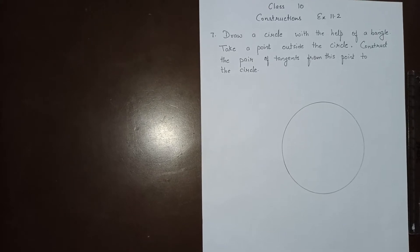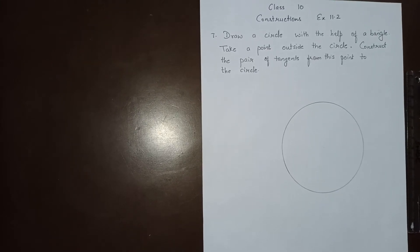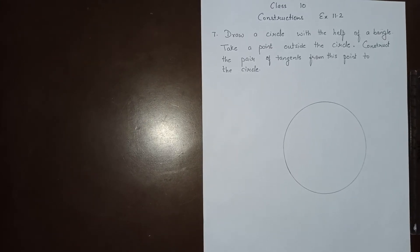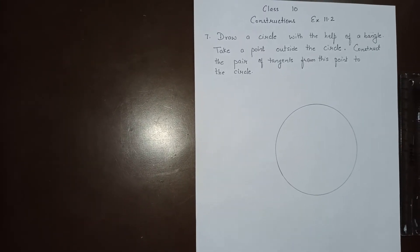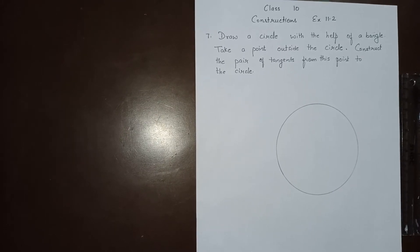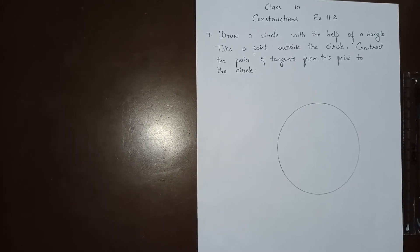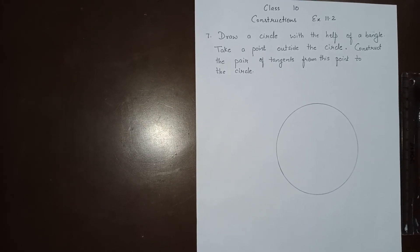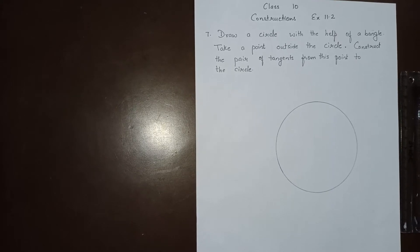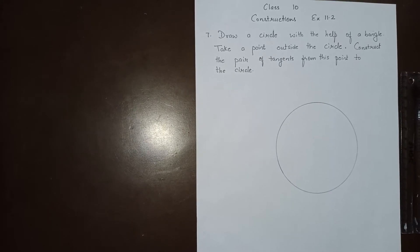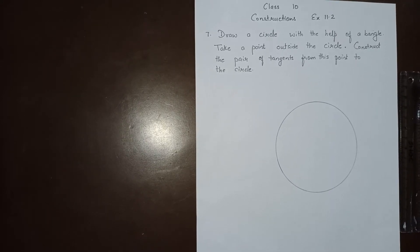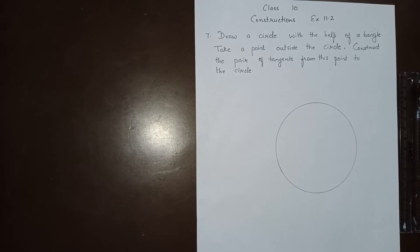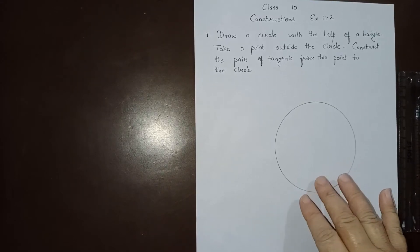This is Class 10 Constructions Exercise 11.2, seventh question: draw a circle with the help of a bangle, take a point outside the circle, and construct the pair of tangents from this point to the circle.